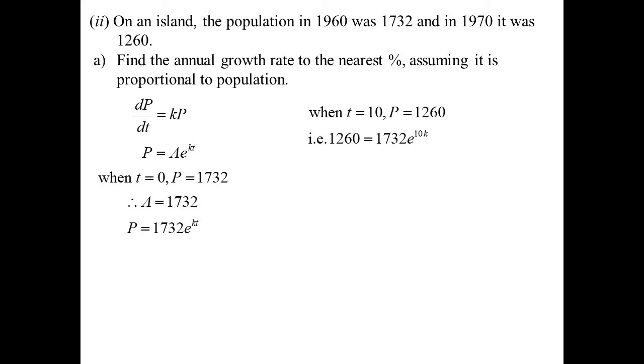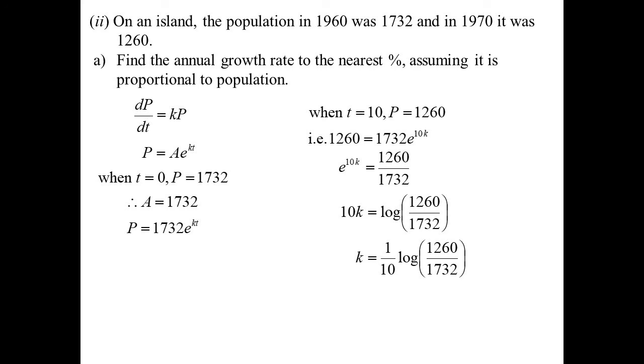We need to make k the subject. So e^(10k) would be whatever that fraction simplifies down to be. And you'll notice I didn't actually bother simplifying it down because obviously it'll give me the same value when I plug it into a calculator. But k is one-tenth the log of 1,260 over 1,732. And so that's to the nearest percent they wanted. So I've done as a decimal, which means as a percent, that's about negative 3% is our growth rate.